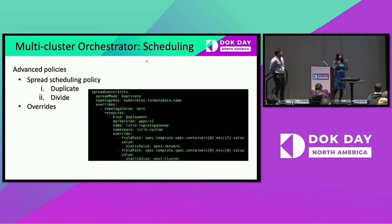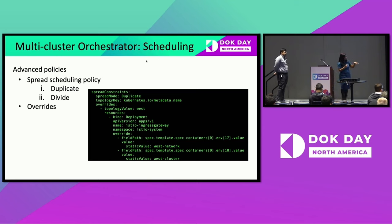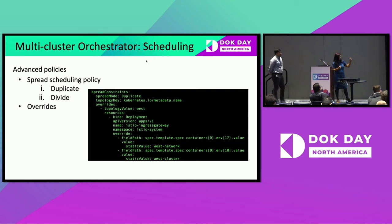Advanced policies specifically help with YugabyteDB and Istio workloads. A spread policy duplicates incoming workloads on multiple clusters and adds overrides — a key feature that allows modifying certain pieces of your manifest with custom values on each cluster. A divide mode alternative splits a single deployment across multiple clusters via percentage specifications. In the demo's actual policy, the Istio ingress gateway needed cluster-specific overrides — the cluster named West required values for West network and West cluster.